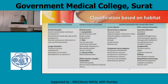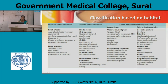Classification based on habitat. There are intestinal human nematodes, somatic human nematodes, and animal nematodes that rarely infect man. Intestinal human nematodes by habitat: in the small intestine — Ascaris lumbricoides (common name: roundworm), Ancylostoma duodenale (old world hookworm), and Necator americanus (American or new world hookworm). In the large intestine — Trichuris trichiura (whipworm) and Enterobius vermicularis (threadworm or pinworm).